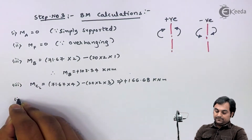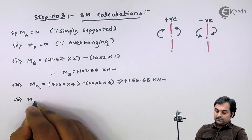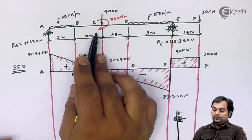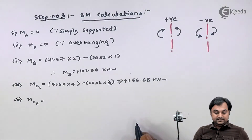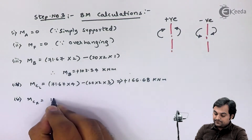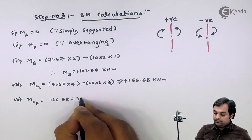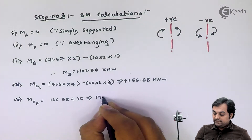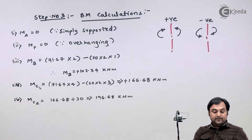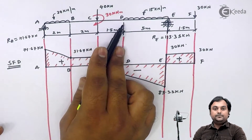Next, I calculate the moment at point C considering the external moment of 30 kN·m. Adding this to the previous value: 166.68 plus 30 gives 196.68 kN·m. So at point C I have two bending moment values.